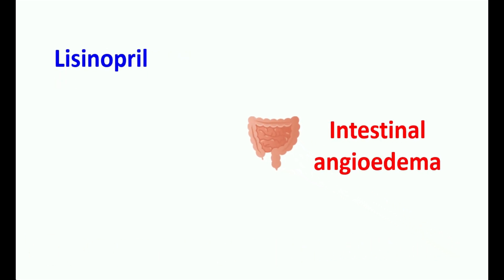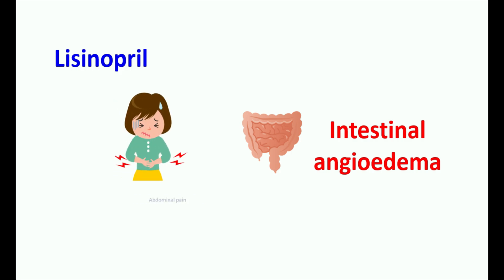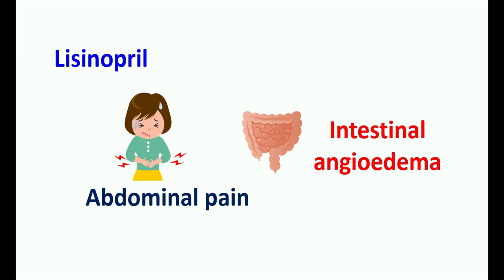Even though rare, lisinopril can also produce intestinal angioedema — swelling in the intestine leading to symptoms like abdominal pain with or without nausea and vomiting. Even though rare, it produces severe abdominal discomfort and abdominal distension. Therefore, after using lisinopril, if you observe any swelling in your abdomen along with severe abdominal pain, you may discontinue this medication and report to your doctor.